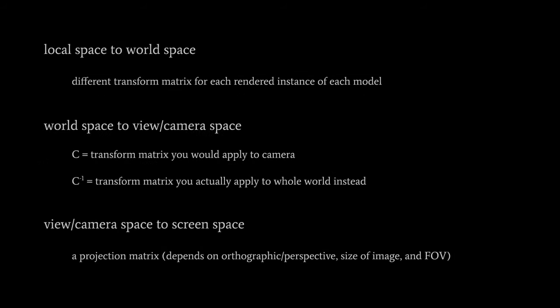Things start out in their own local coordinate systems, each model separately defined in modeling programs like Maya and Blender. Then we bring them together into one world space. Each model has its own transform matrix because they're transformed in different ways. So for each instance of every model, we apply the transform matrix of that instance to all the vertices of that model. Now all the vertices of all our models are in one big world space.